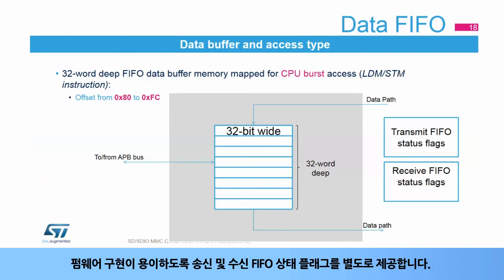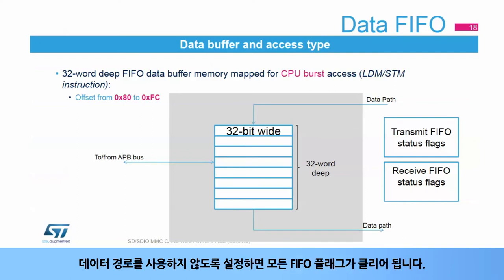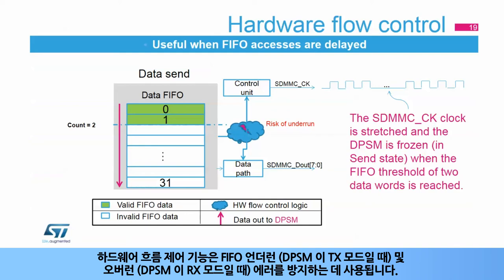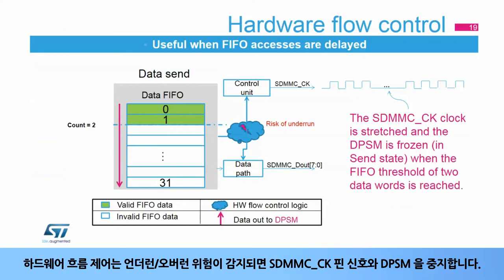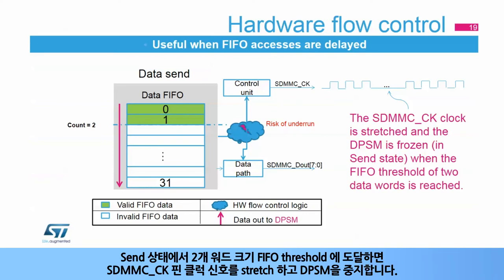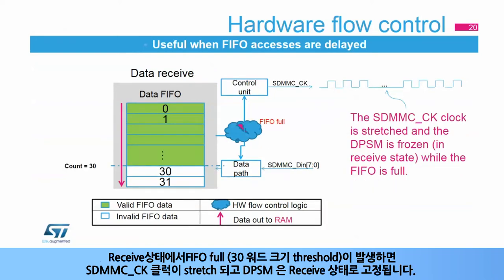Dedicated receive and transmit FIFO status flags are available to ease firmware implementation. When the data path is disabled, all FIFO flags are deasserted. The hardware flow control function is used to avoid FIFO underrun in TX mode and overrun in RX mode. The hardware flow control logic stops the SDMMC CK signal and freezes the DPSM when a risk of underrun or overrun is detected. In send state, the clock is stretched and the DPSM is frozen when the FIFO threshold of two data words is reached. In receive state, the clock is stretched and the DPSM is frozen while the FIFO is full (threshold is 30 words). The clock and DPSM are restarted when the FIFO full flag is deasserted.